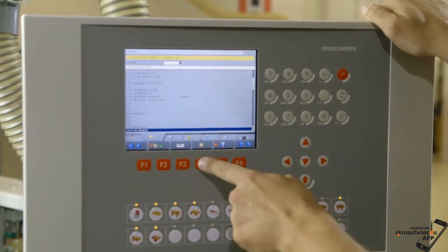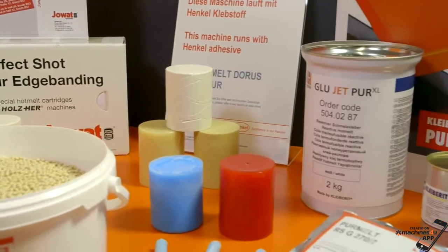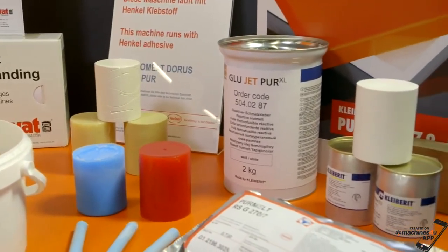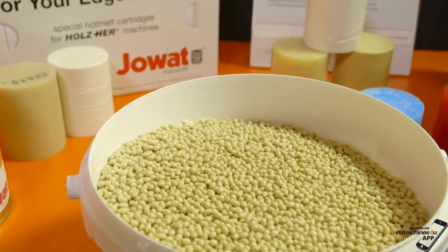Nearly 230 feet of edging can be glued on a standard panel with one 300 gram glue jet cartridge. This means that one kilogram of glue is sufficient for 690 applying feet.